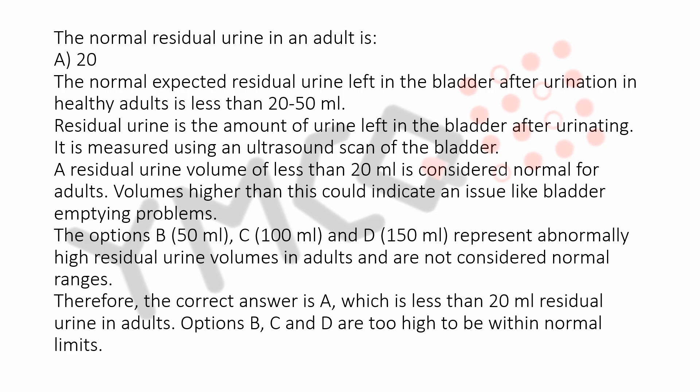Therefore, the correct answer is A, which is less than 20 milliliters residual urine in adults. Options B, C, and D are too high to be within normal limits.